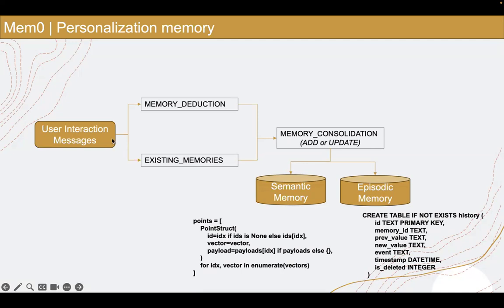I looked at the code and put it into a visualization. User interaction messages going into Mem0 memory first go through a memory deduction step — it tries to extract facts and preferences from the interaction. These are the extracted memories from the current interaction. Then there are existing memories stored previously, and both go as input to a memory consolidation process.